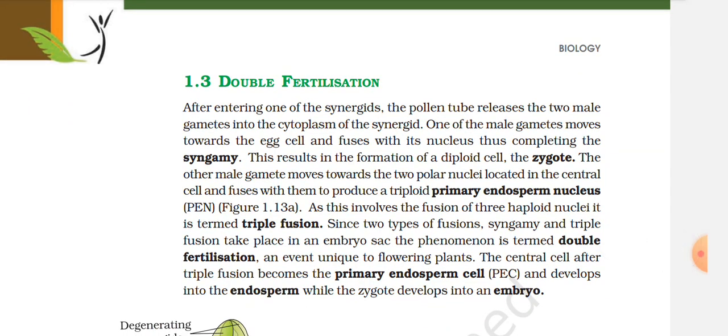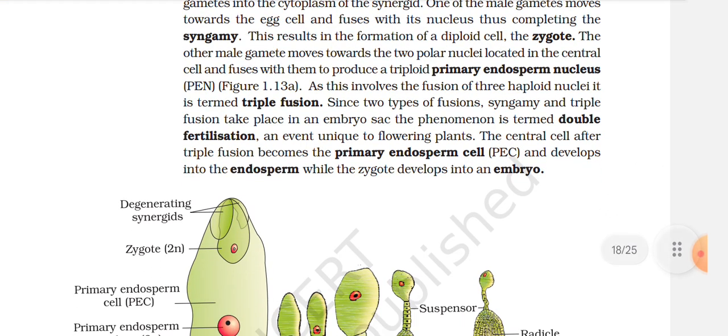1.3 Double Fertilization. After entering one of the synergids, the pollen tube releases the two male gametes into the cytoplasm of the synergid. One of the male gametes moves towards the egg cell and fuses with its nucleus, completing syngamy — resulting in the formation of a diploid zygote. The other male gamete moves towards the two polar nuclei located in the central cell and fuses with them to produce a triploid primary endosperm nucleus (PEN). Since this involves the fusion of three haploid nuclei, it is termed triple fusion. Since two types of fusion — syngamy and triple fusion — take place in the embryo sac, the phenomenon is termed double fertilization, an event unique to flowering plants. The central cell after triple fusion becomes the primary endosperm cell (PEC) and develops into the endosperm, while the zygote develops into an embryo.